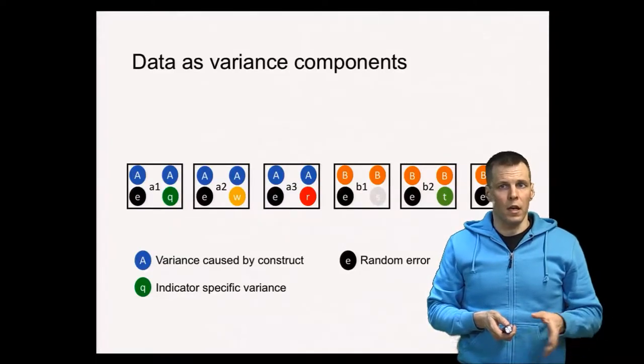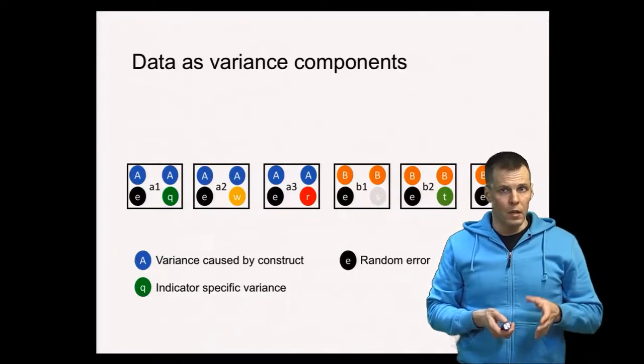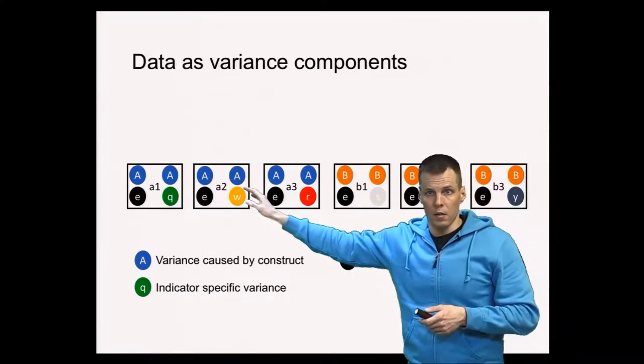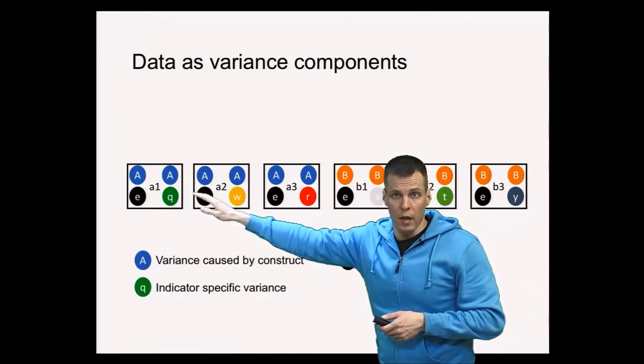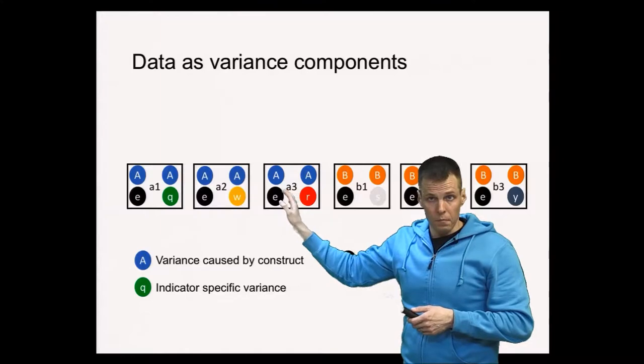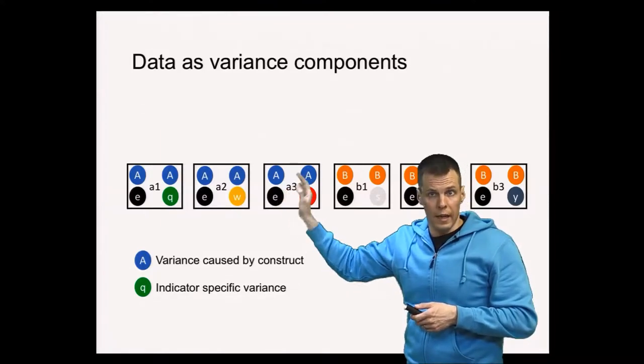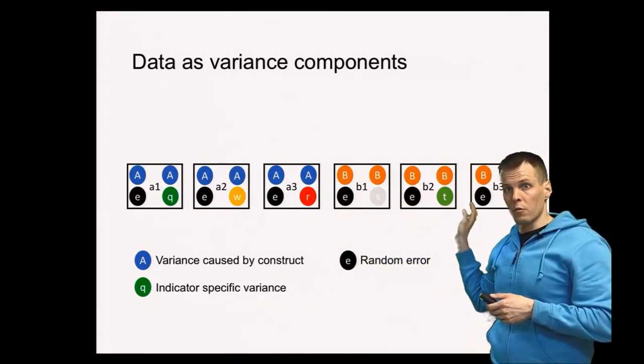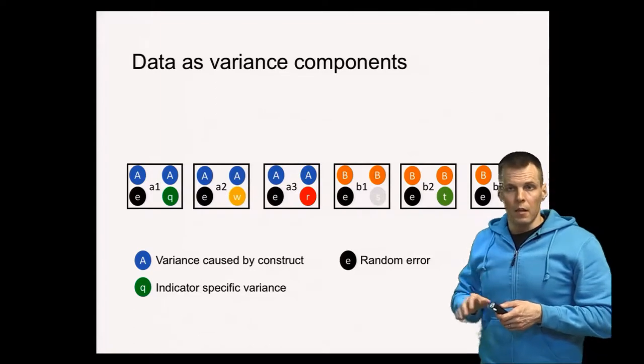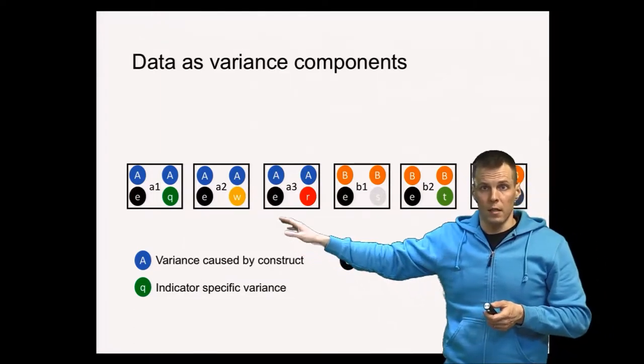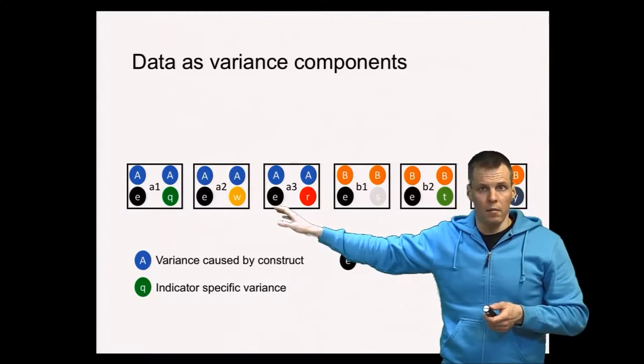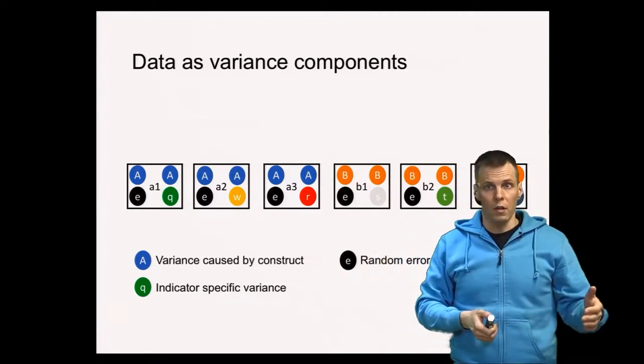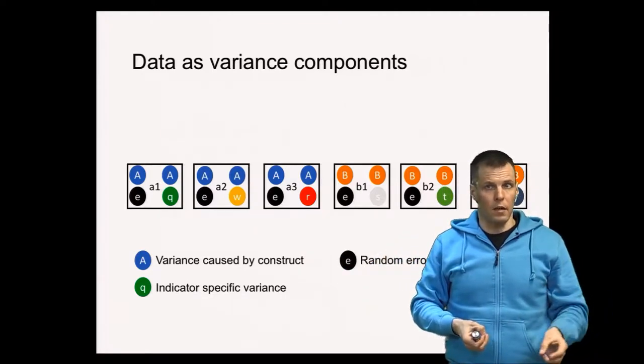The idea of factor analysis is that there are different variance components in the data. Typically, if we have a measurement occasion, there is variance caused by the construct. So we have indicators A1, A2, and A3 that are supposedly valid measures of construct A, and we have B1, B2, and B3 that are supposedly valid measures of construct B. Then each indicator also has this random noise unreliability and some unique aspects. So if these are survey questions, then the survey questions measure the construct. They could measure something else, and then there's unreliability.